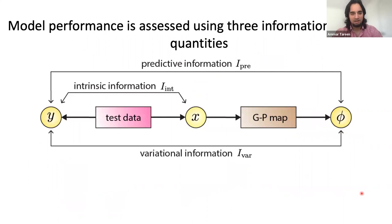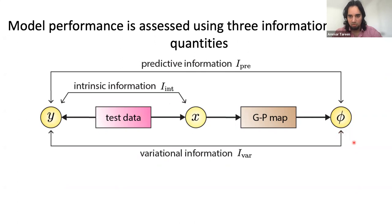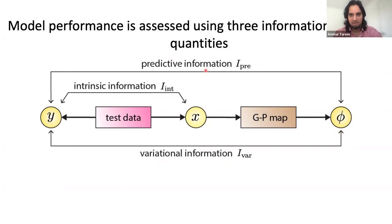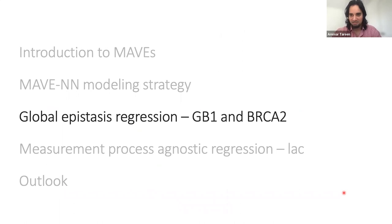Intrinsic information represents the mutual information between sequences X and measurement Y, and is inherent to a dataset. Predictive information quantifies the mutual information between measurements and the latent phenotype assigned by a model. Variational information is a lower bound on predictive information, computed rapidly during training. On test data, these metrics obey the inequality: intrinsic information ≥ predictive information ≥ variational information. With the modeling strategy defined, we're ready to dive into results, starting with global epistasis regression.